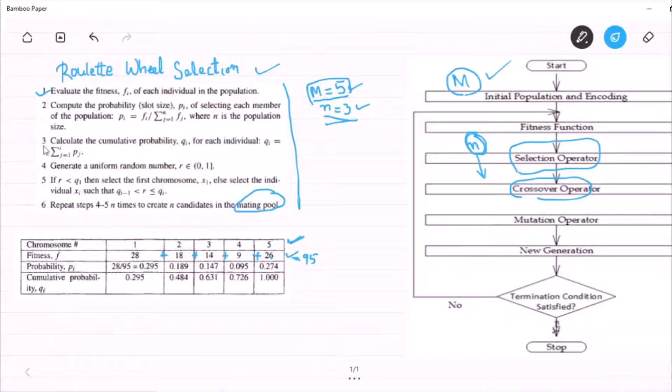Now, apply step 2. 28 by 95 is 0.295, 18 by 95 is 0.189 and so on.